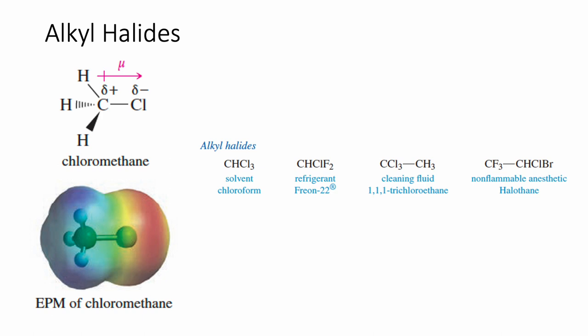But when we add a halogen atom, replacing one of the H's — like in chloromethane — we've added a dipole moment, and this molecule becomes polar. That chlorine is more electronegative than carbon, so it pulls some of the electron density away from the carbon, giving the halogen a partial negative charge and leaving the carbon with a partial positive charge. We can represent this with a dipole moment, as seen in the top image, or with an electrostatic potential map in the bottom image. In the EPM, red indicates high electron density and blue indicates low electron density. We can see that most of the electron density in chloromethane is on the chlorine, as expected.